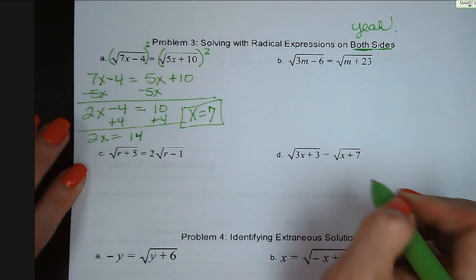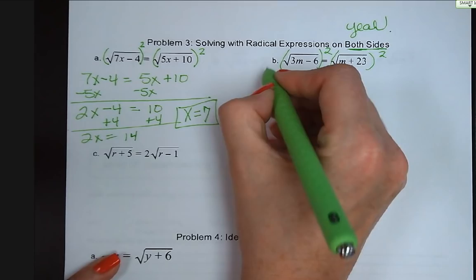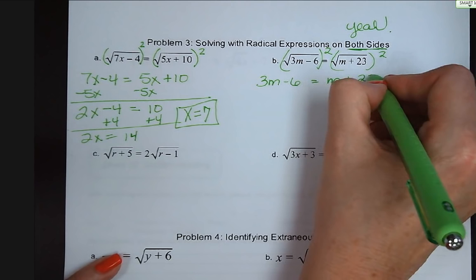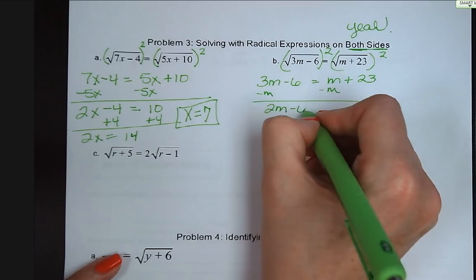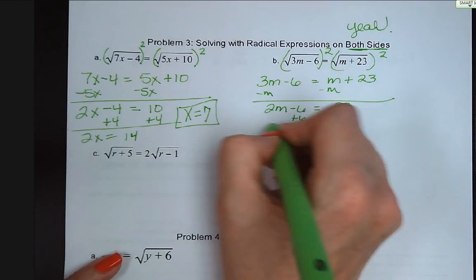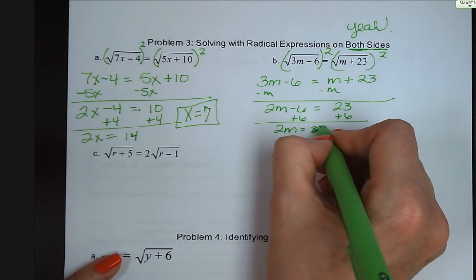Letter b: square both sides of the equation. We get 3m minus 6 equals m plus 23. Subtract m from both sides: 2m minus 6 equals 23. Add 6 to both sides: 2m equals 29. Divide by 2: m equals 14.5, which we can write as a decimal since it's a simple terminating decimal.